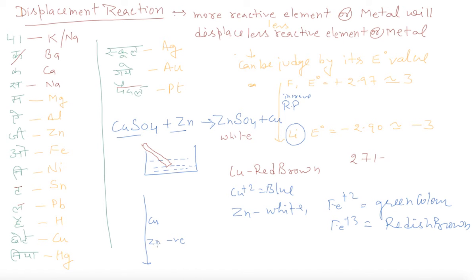Whose value is more negative, that is the best reducing agent and displace that metal which is having positive. So this is the concept actually. E-note value I will tell in the coming classes how it is come and how we can find out.